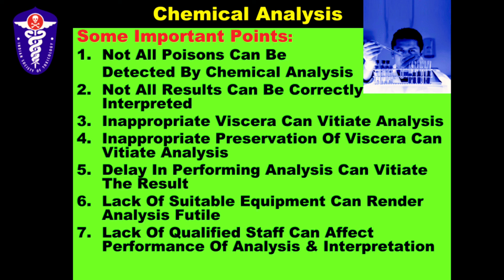If the wrong kind of viscera was selected for analysis, the analysis is not going to be useful. Inappropriate preservation can also lead to vitiation of chemical analysis. If there has been a lot of delay in performing analysis, the result can again be vitiated. If there is no required equipment for the specific kind of analysis, that can render the analysis futile. Lack of qualified staff, even if everything else is in place, can lead to problems because interpretation is always very important — not just the performance of the analysis.